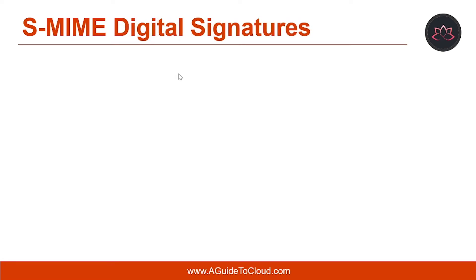Let's talk about S-MIME digital signatures. Digital signatures are the most commonly used service of S-MIME. As the name suggests, digital signatures are the digital counterpart to the traditional legal signatures on a paper document. As with a legal signature, digital signatures provide several security capabilities, including authentication, non-repudiation, and data integrity.